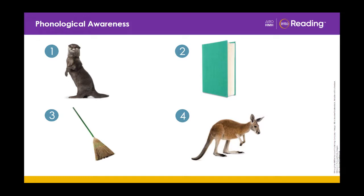Look at the second picture. The word is book. How many syllables are in the word book? Just one. Very good. Picture three is a broom. How many syllables are in the word broom? One syllable.